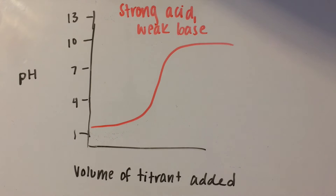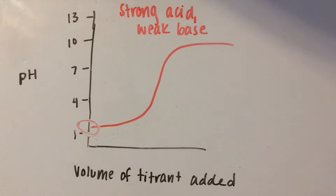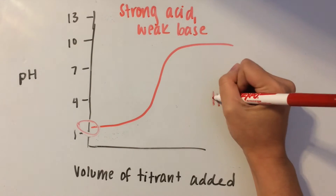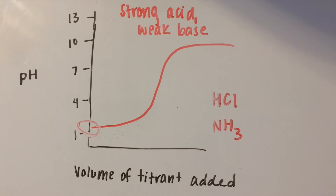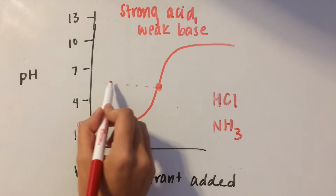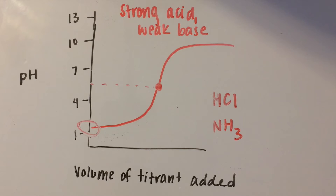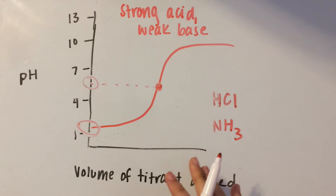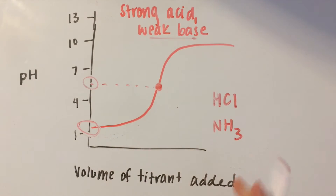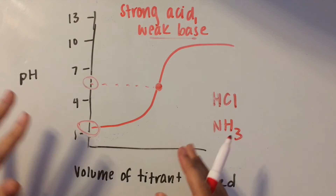Now we're going over a titration curve for a strong acid and a weak base. Here you see that the pH is still really low, meaning we have our strong acid to start with — let's go with HCl again. And for our weak base, let's go with NH₃, which is ammonia. We see that our equivalence point is around here. Notice that this isn't at 7 like the other titration curve — it's a little below 7, meaning that at the equivalence point the solution is slightly acidic. That's because we have a weak base instead of a strong one balancing out the effects of the strong acid.